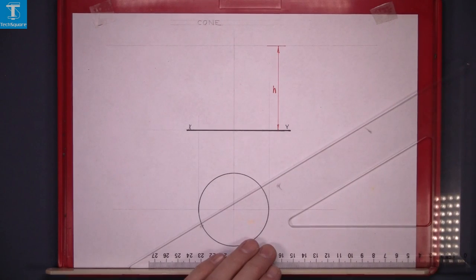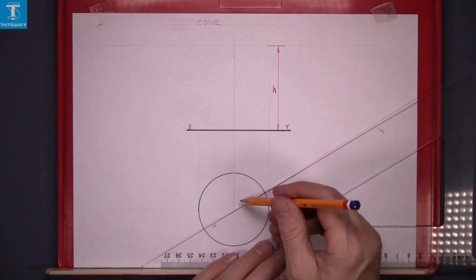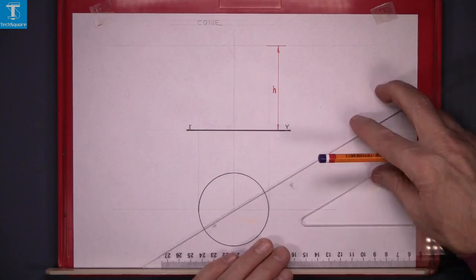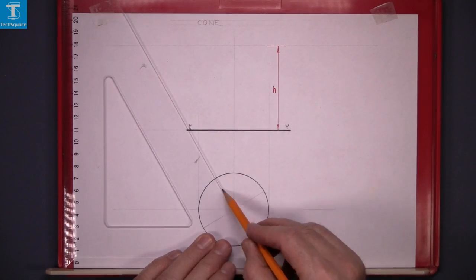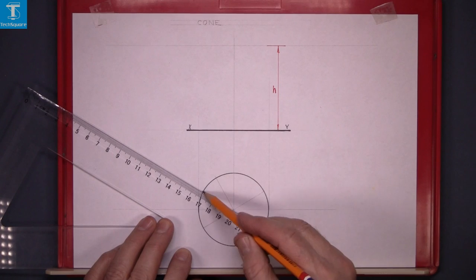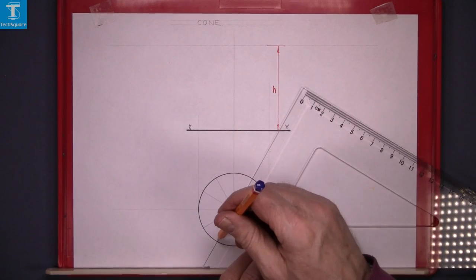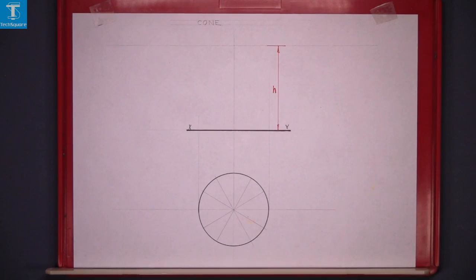So this is a line at 30 degrees, 60 degrees, 30 degrees and at 60 degrees again. And that's the cone divided off into 12 spaces.